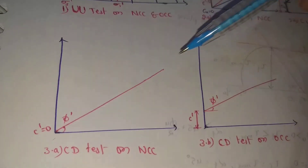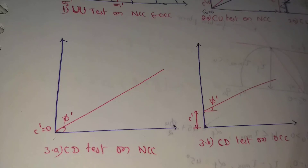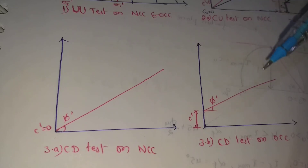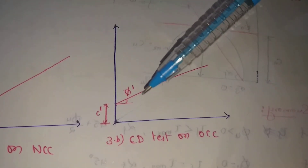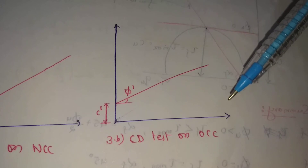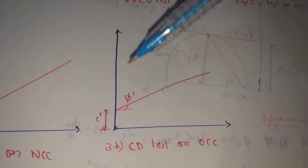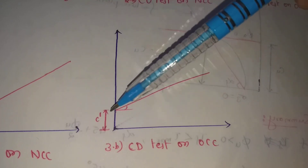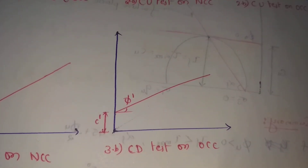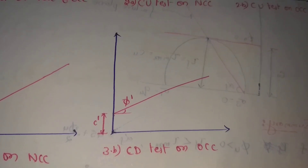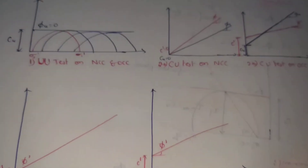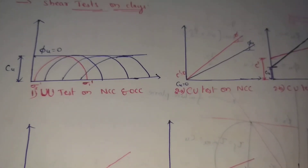The failure envelopes are shown — the red color on this failure envelope shows some φ' angle. φ' means effective angle of shearing resistance. CD test means consolidated drained test on OCC — over-consolidated clays. A graph of this failure is formed, showing some height with effective cohesion value, and some angle φ' — effective angle of shearing resistance — for both normally consolidated and over-consolidated clays.